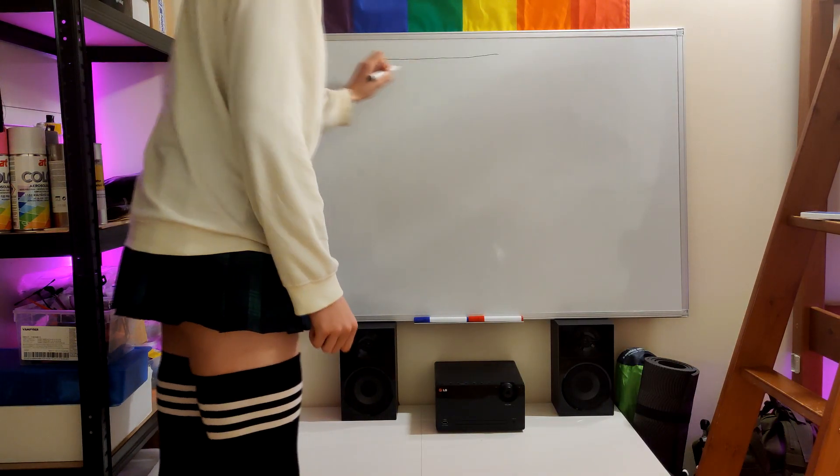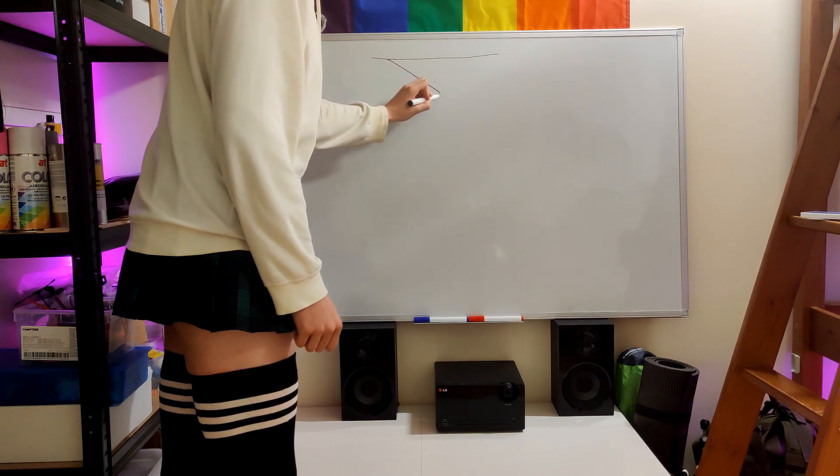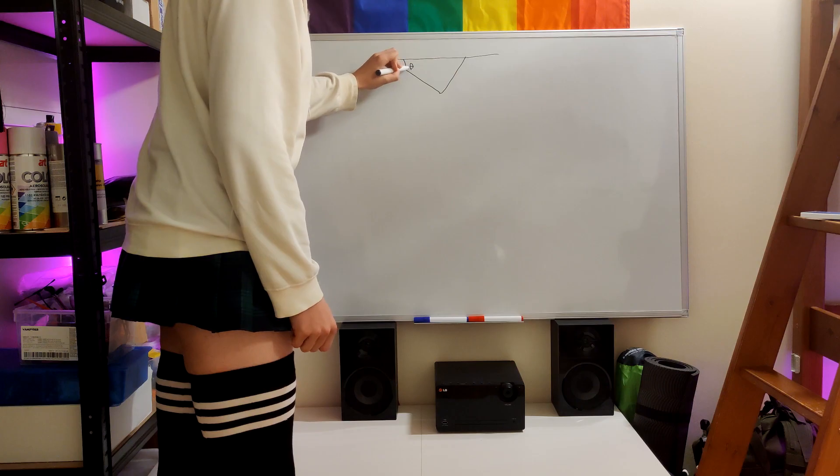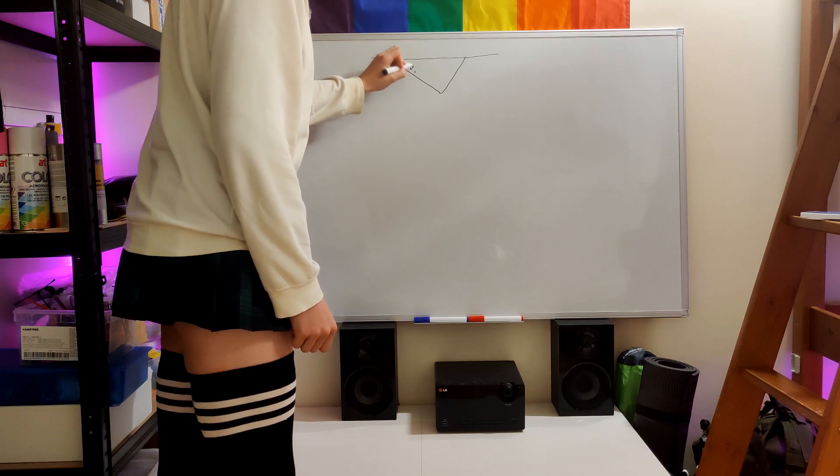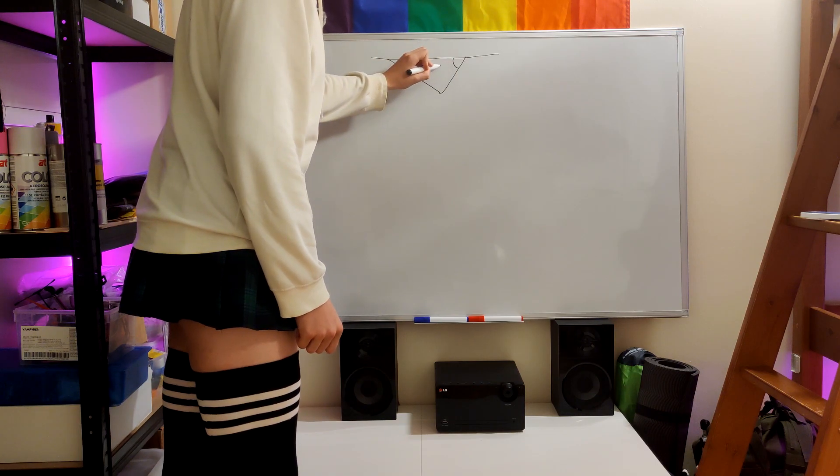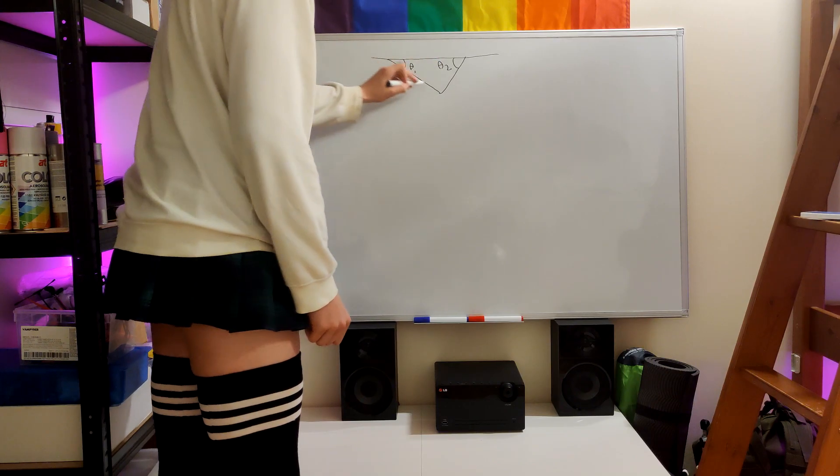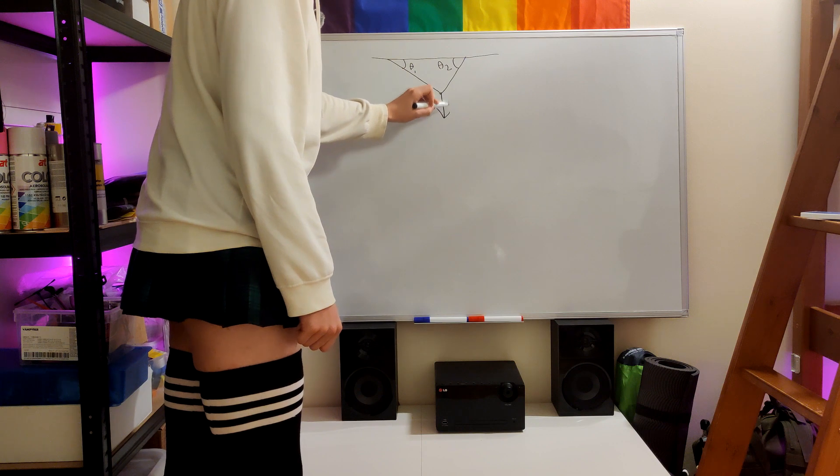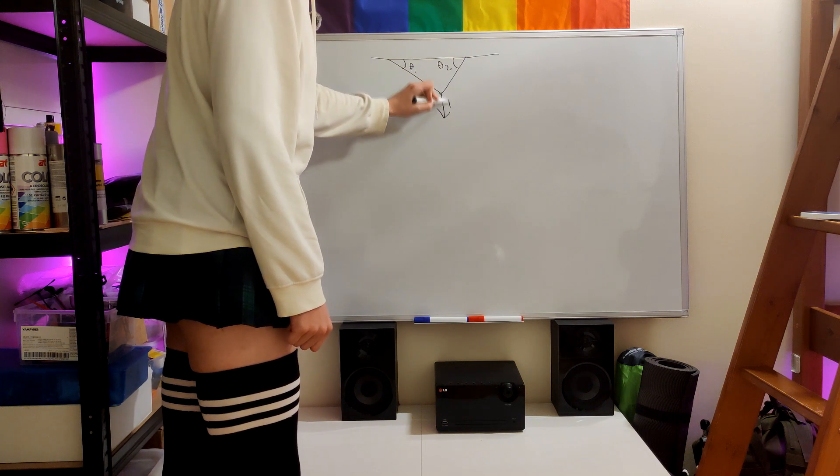Let's say we have a rope right here and another rope. This one can be theta 1 and this can be theta 2, and then we have a weight right here which just hangs down like this. Let's call it F.